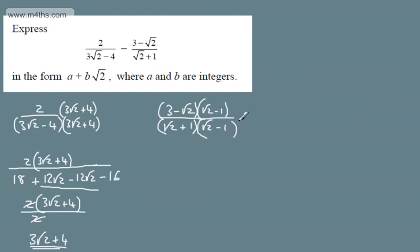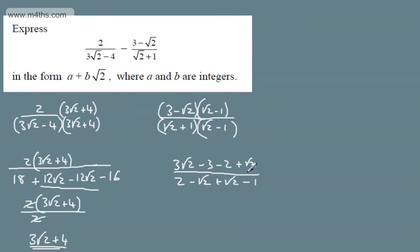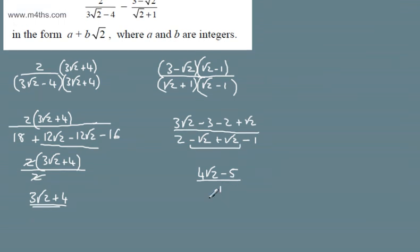Expanding the numerator: I'm going to have 3 root 2 minus 3, then minus 2, and then plus root 2. Expanding the denominator: root 2 times root 2 is 2, then minus root 2 plus root 2 which cancels, and then minus 1. Tidying the numerator: 3 root 2 plus root 2 gives 4 root 2 minus 5. In the denominator, 2 minus 1 gives 1. So we can write this as 4 root 2 minus 5.